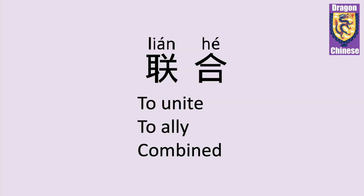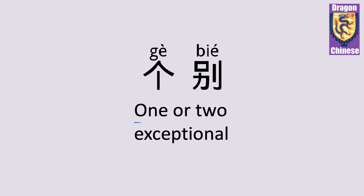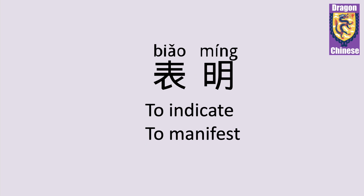联合 — to unite, to ally; combined. 个别 — one or two; exceptional.